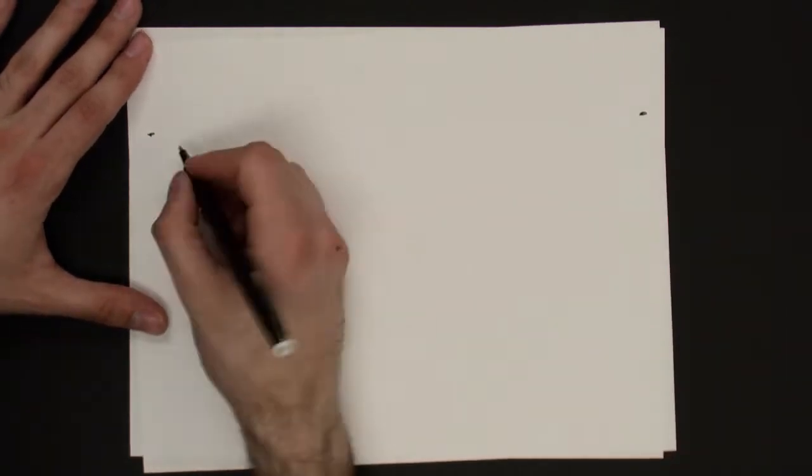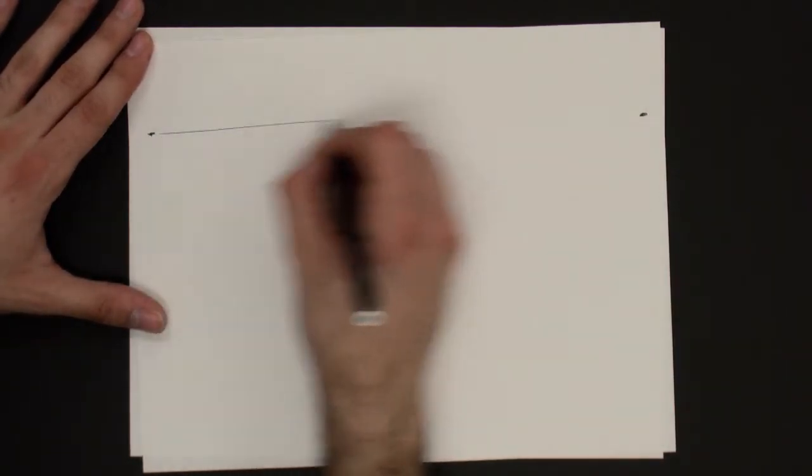So let's go ahead and lay down our vanishing points. Put one over here, and one over here, and then we'll draw a horizon line in between them.